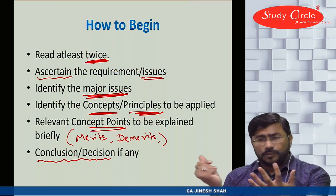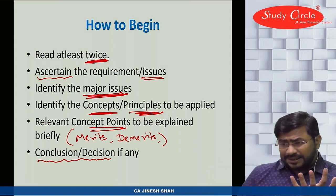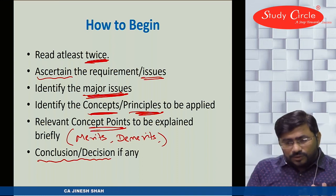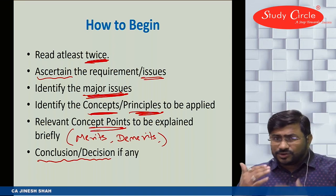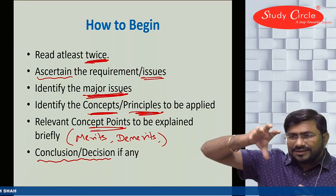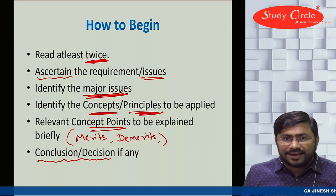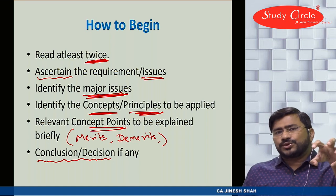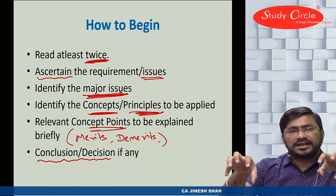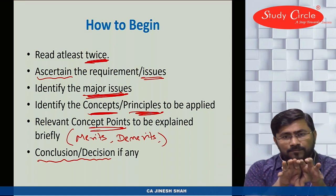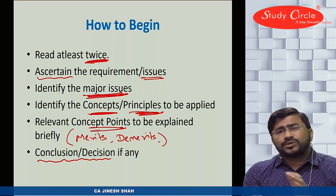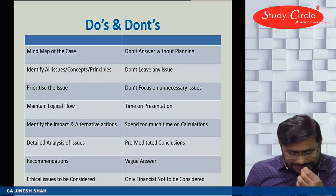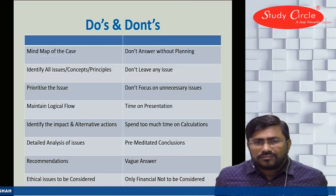So, how to go about it: first, read the case twice and simultaneously note down all the issues. Among those issues, prioritize them — a sort of ranking — which issues to tackle first and which later. Make a list of major issues, find out which concept in our subject is connected to each major issue, explain those concepts in depth, and then give your conclusion. That is how the flow of the case study works.